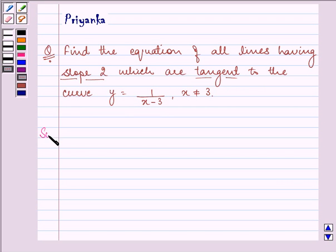Now let us quickly proceed with the solution. We have y equals 1 over x minus 3, where x is not equal to 3.